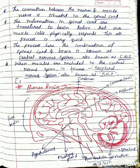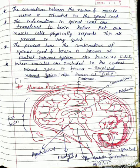Let us move on to the next topic — the structure of the human brain. The structure of the human brain contains many parts such as cerebrum, cranium, midbrain, spinal cord, cerebellum, medulla, pons, pituitary gland, hypothalamus, forebrain, midbrain, and hindbrain.